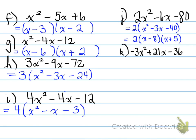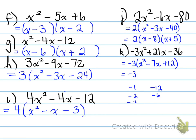Negative 3x squared plus 21x minus 36. Common factor — try this question yourself by stopping the video now. Pull out the negative 3, and you get x squared minus 7x plus 12. We factor again — negative 3 times the inside. The product is 12 and the sum is negative 7, so both signs are negative. Negative 1 and negative 12 — nope, doesn't work. Negative 2 and negative 6 — nope, doesn't work. Negative 3 and negative 4 — yes, that works. So we get negative 3 times x minus 3 times x minus 4. This is the fully factored answer for question k.